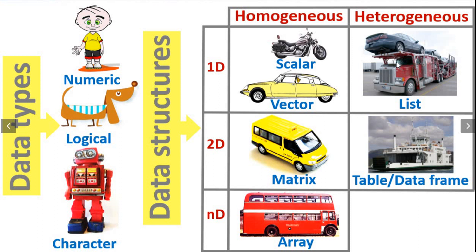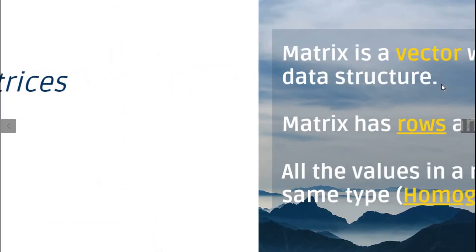On the other hand, a list stores data in linear order and can store data of different types — for example, numeric, logical, and character. Think of a list like a trailer: a trailer can have a human, an animal, and a robot in the front seat and a car, motorcycle, and minivan at the back. A list can also store vectors, matrices, and even other lists. A data frame is similar to a list — it accepts heterogeneous data types but is also two-dimensional.